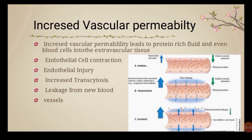The mechanisms of increased vascular permeability include: first, endothelial cell contraction — leading to intracellular gaps in post-capillary venules, the most common cause of increased vascular permeability. Different mediators like histamine, bradykinin, leukotrienes, interleukin-1, and tumor necrosis factor act on receptors, causing endothelial cells to contract, widening gaps so the vessel becomes leaky, allowing fluid and proteins to escape and causing edema.